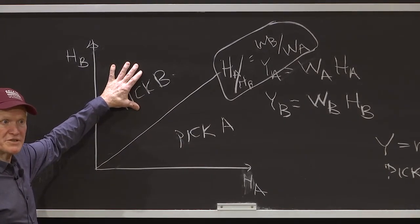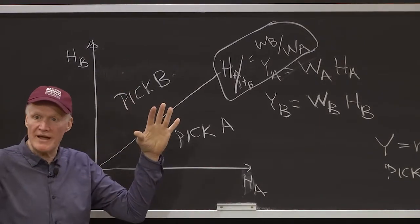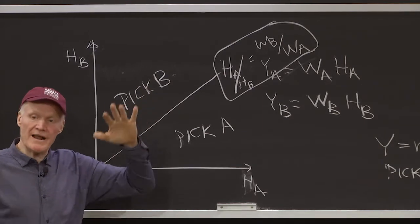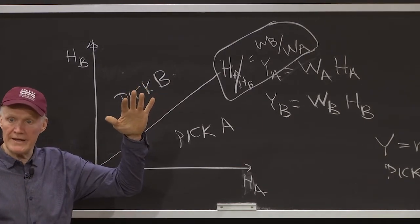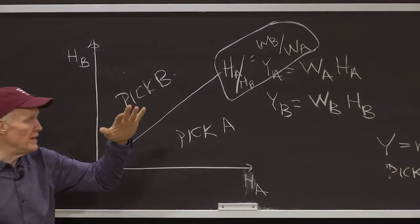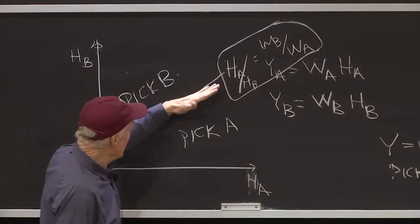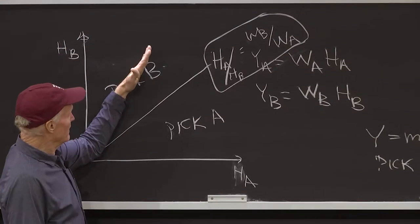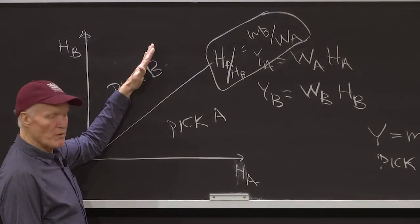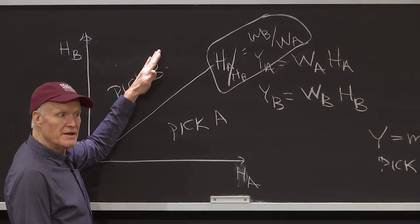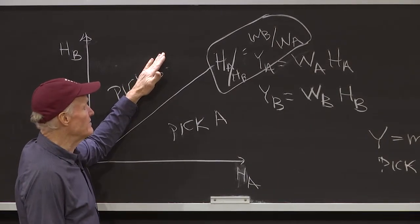You can think about how the equilibrium is determined. There's some underlying demand for A and B. If there's a lot of demand for people to do A, and not much demand for people to do B, then this line's going to rotate up like this, and it's going to move a bunch of people into A. This line's going to be very steep in that case.